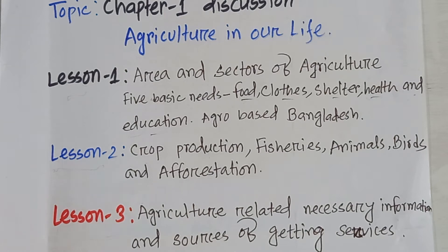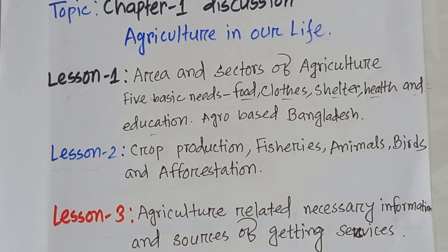Dear students, another crops are called horticultural crops. They are gourd, beans, cauliflower, cabbage, tomato, potato, etc. Vegetables are also called horticultural crops. And after the crop production, we will get fisheries.